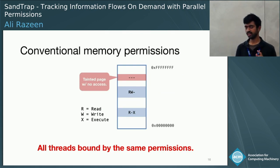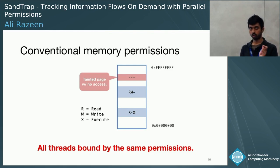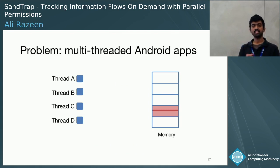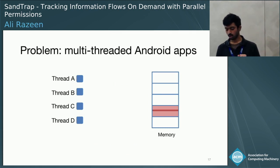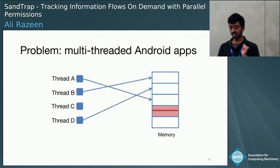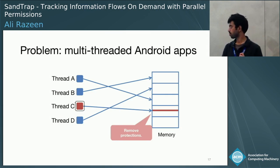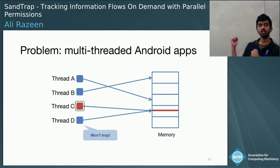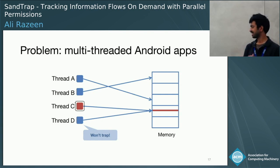Recall that in a multi-threaded process, all threads are bound equally to the protections applied in that process's address space. Let's revisit the previous slide in the context of Android, where apps are inherently multi-threaded and devices are typically multi-core, so there is true parallelism. All threads run at full speed, and when a thread tries to access tainted data, it traps and is emulated. The system removes the page protections just as before. But observe that now, if a different thread tries to access the same tainted data, it's not going to trap because the same page protections apply equally to all threads. So we are not going to taint track that thread, which is a problem.